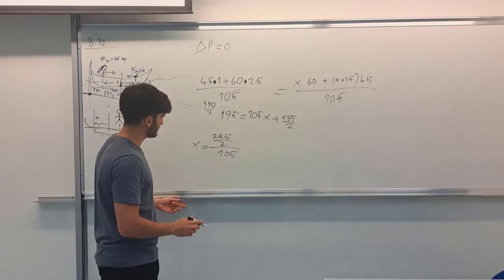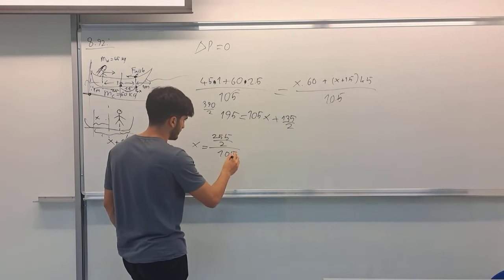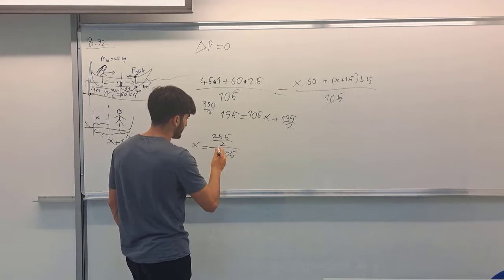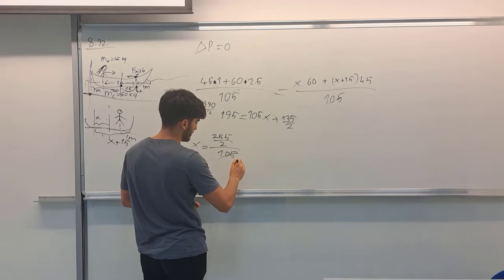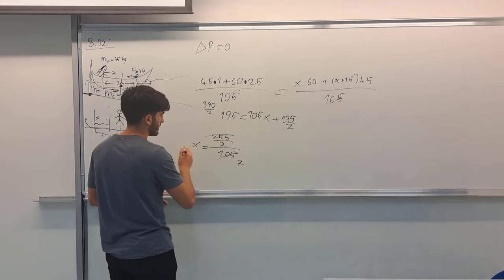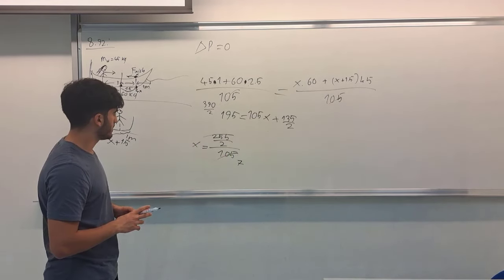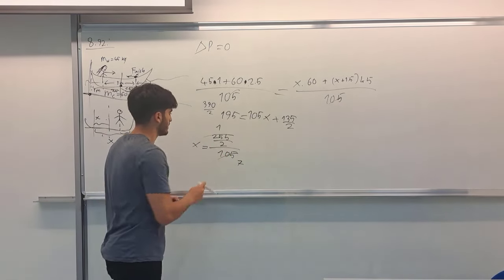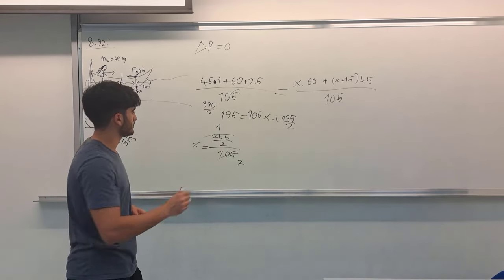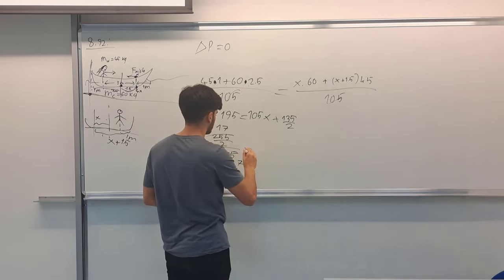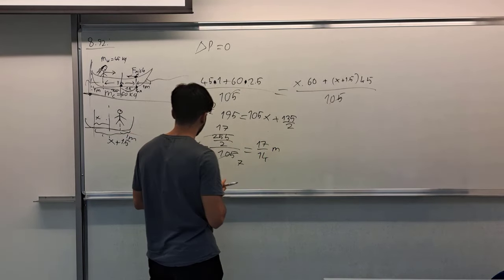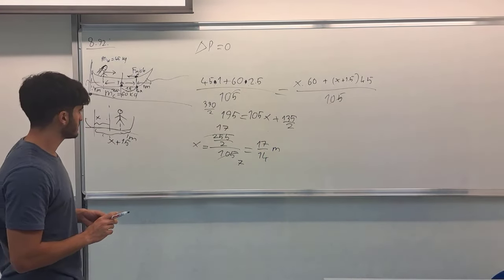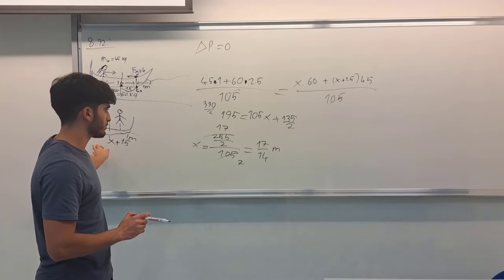Now I can divide these things by 5, and also I can divide these things by 15. So when I divide this by 15, I obtain 1 and 17. So the result is 17 over 14 meters. This is the canoe's new center of mass.